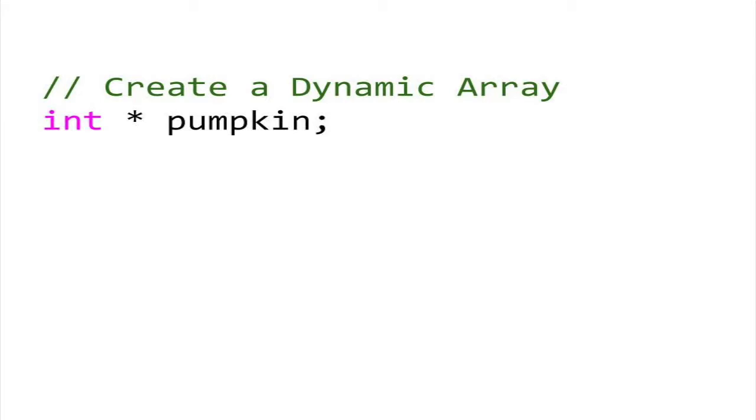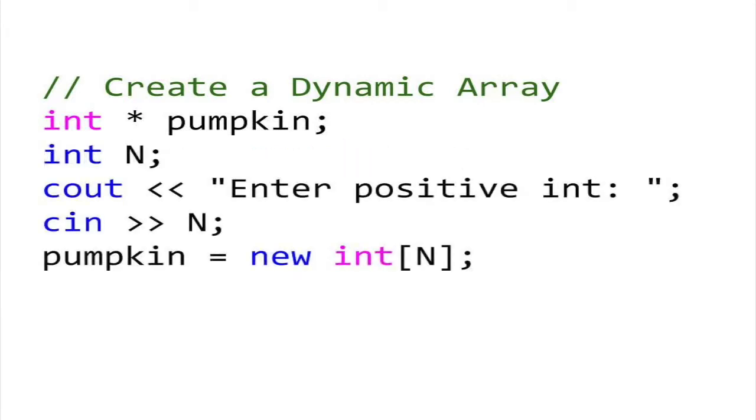Here is an example. Suppose we declare a pointer to an int called pumpkin. We can now use pumpkin as a reference to an array of any size. Suppose we add logic to our program that asks the user to input a number.